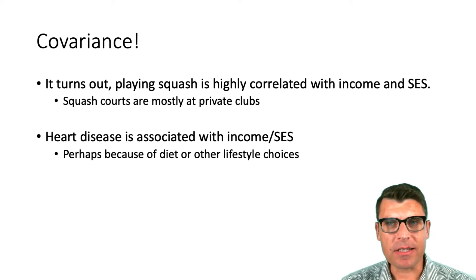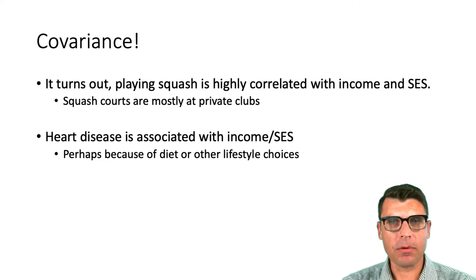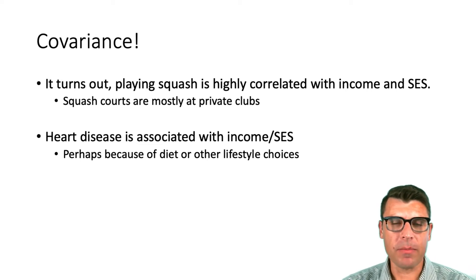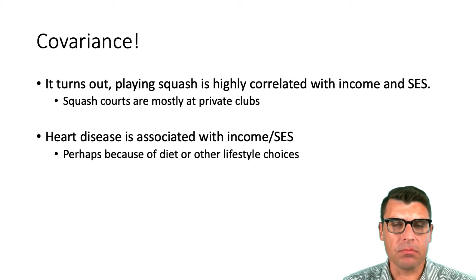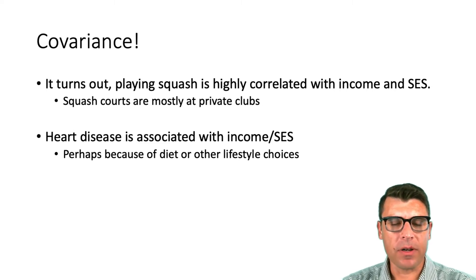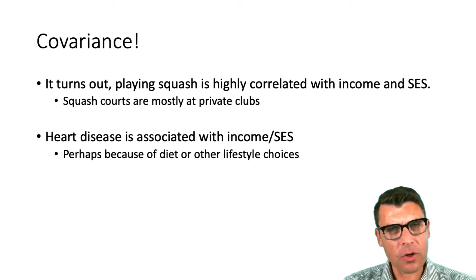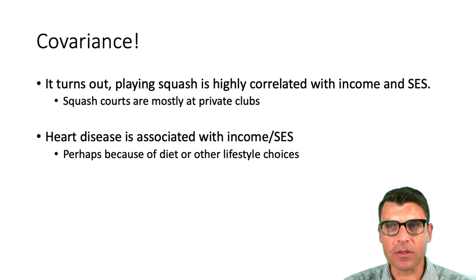This makes sense because squash courts are mostly at private clubs, and people who spend a lot of time playing squash probably have the flexibility of time and the money to be part of a private club. We also have evidence that heart disease is associated with income and socioeconomic status — one big reason being diet: the types of food that higher-income people are able to eat, and other lifestyle choices. So a critical consumer of evidence will immediately ask: have you controlled for income or socioeconomic status?